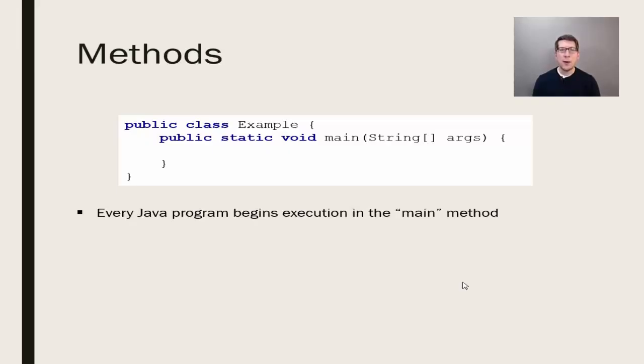To begin, we write our code in the main method, which is called automatically to start our Java program. The format of the main method is to type public static void main, followed by a set of parentheses with string, a set of square brackets, and then a shorthand term for arguments, args.